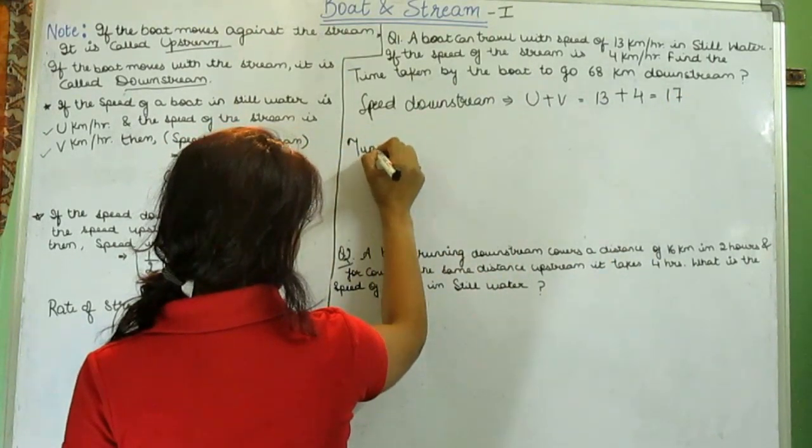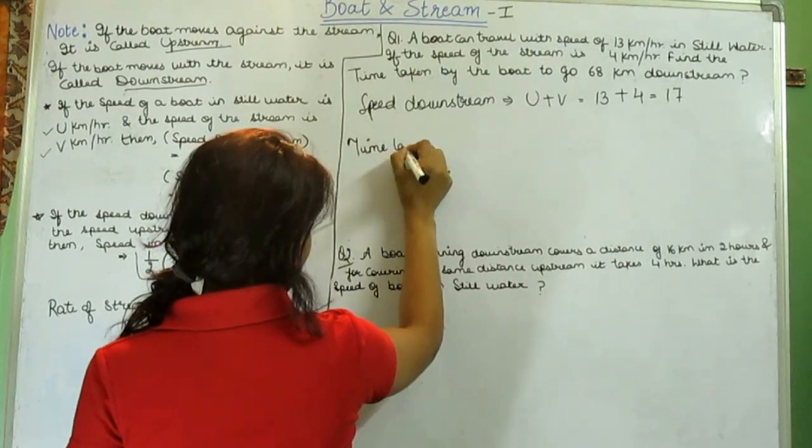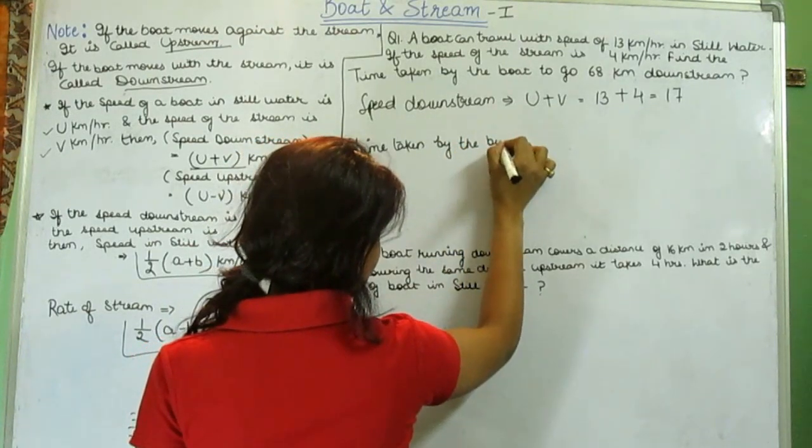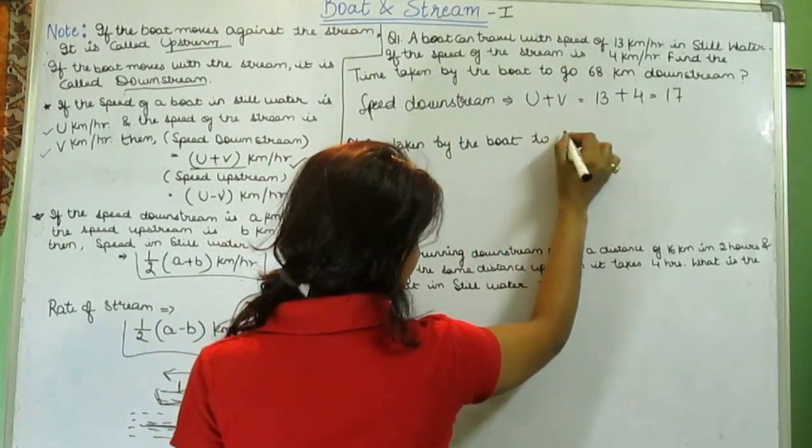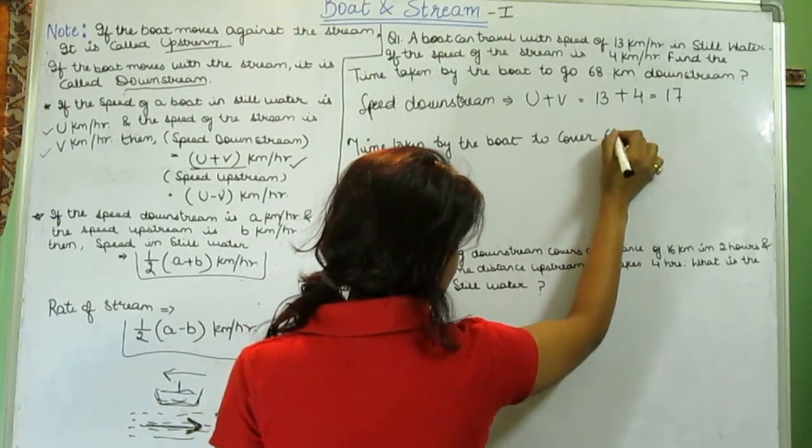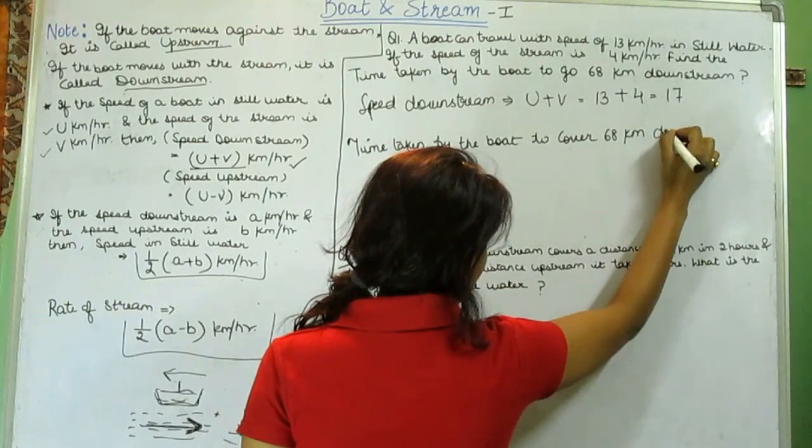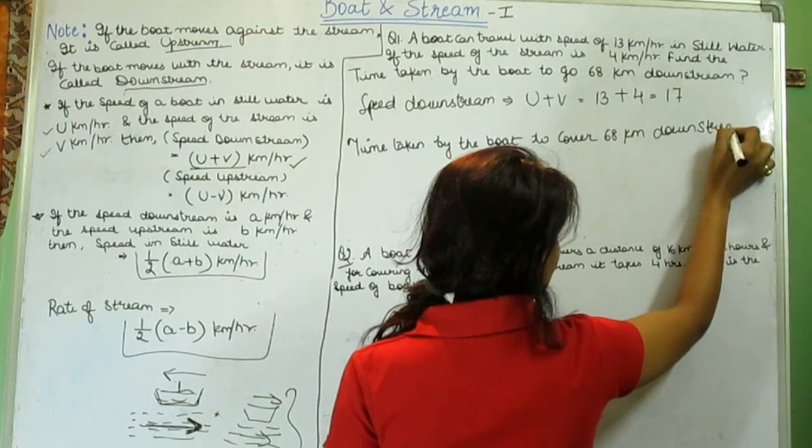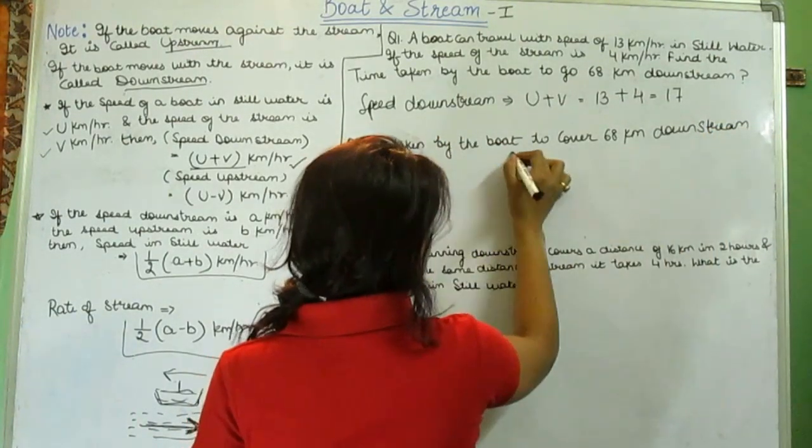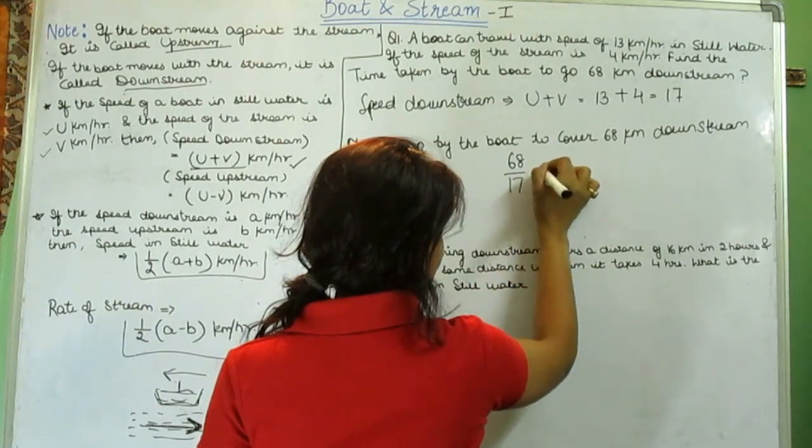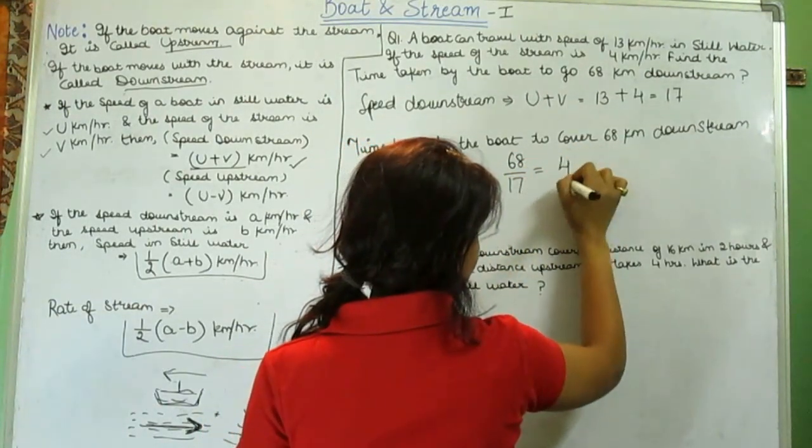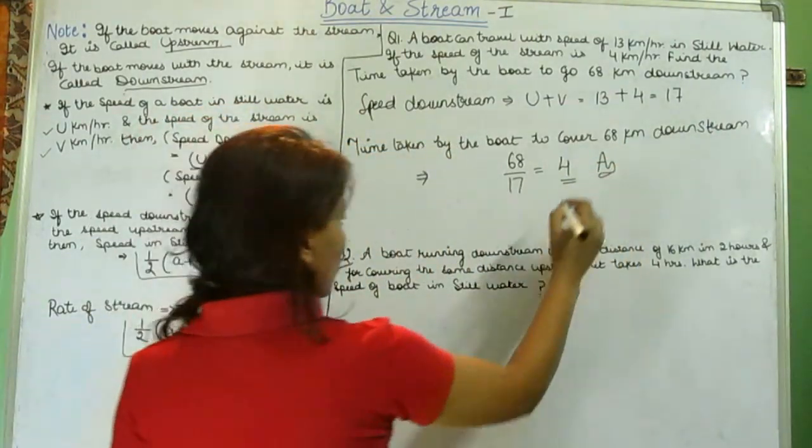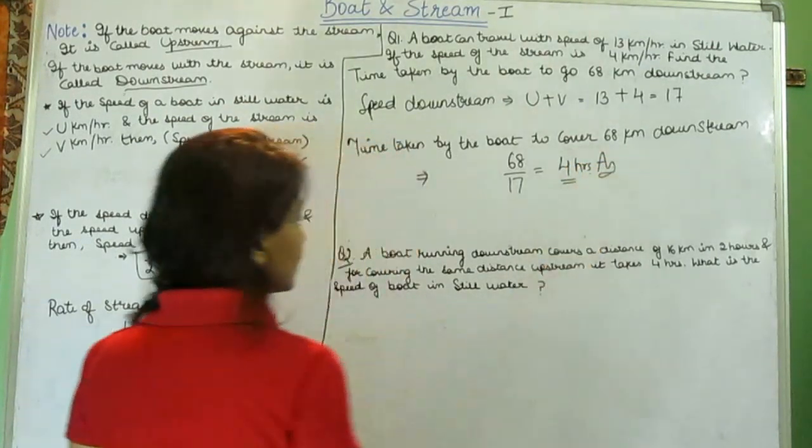And now, time taken by the boat to cover 68 kilometers downstream will be 68 by 17, and we have the answer that is 4. 4 hours is the answer.